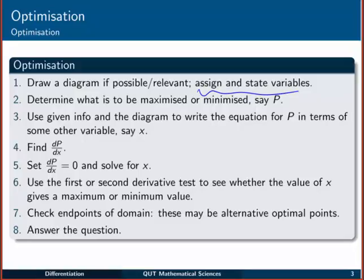Once you've done that, you need to think about which of those variables is the one that needs to be maximized or minimized. In this step-by-step process, I'm going to refer to that as P. Now using the given info in the question or the problem statement, as well as the diagram you've drawn, if you did, you can write an equation for P, a mathematical model if you like, in terms of other variables. Hopefully it'll only be one variable because that's what we're studying here, and I'm going to refer to that as x. So P is dependent and x is independent.